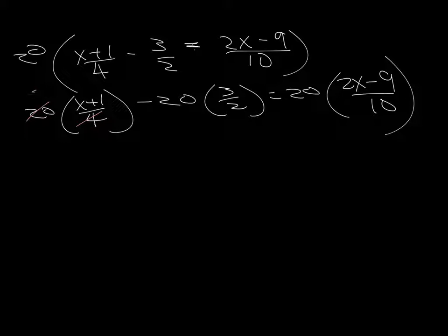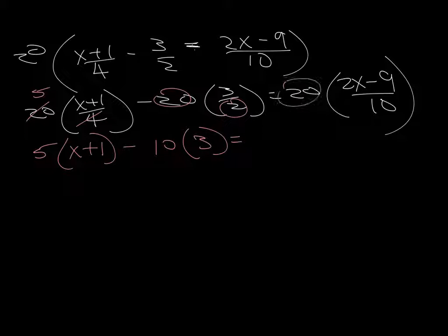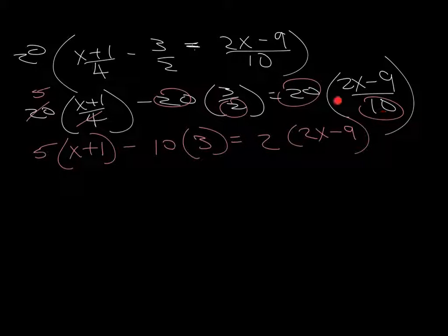That and that cancel, and I have a 5. 20 over 2 is 10. 20 over 10 is 2. Okay, so notice what I did again. This and this reduced to 2, and then we write that. This and this reduced to 10, and we got that. This to this reduced to 5, and we have that. Alright, so let's go ahead and distribute.